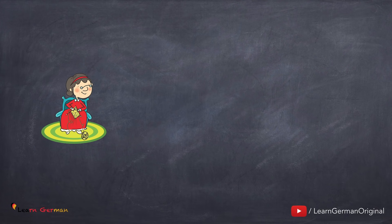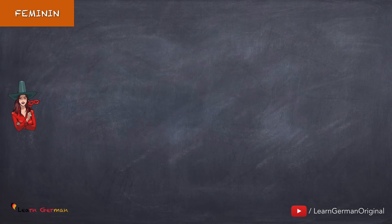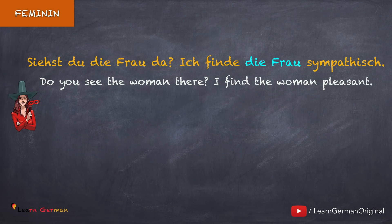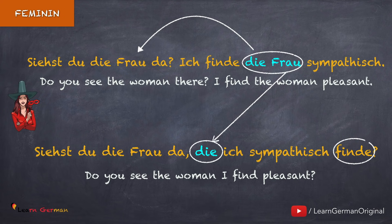Und hier ist das erste Beispiel für feminine Artikel im Akkusativ: Das ist meine Mutter, die ich sehr liebe. Hier ist ein weiteres Beispiel: Siehst du die Frau da? Ich finde die Frau sympathisch. In dem zweiten Satz ist ich das Nominativsubjekt und die Frau ist das Akkusativobjekt. When we make a Relativsatz we would say: Siehst du die Frau da, die ich sympathisch finde?